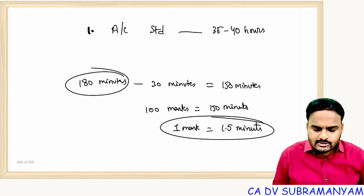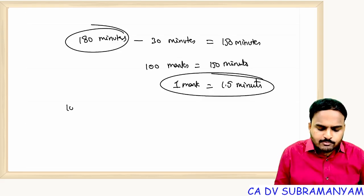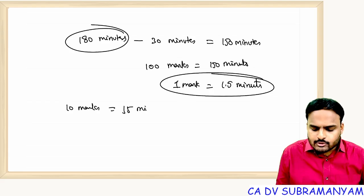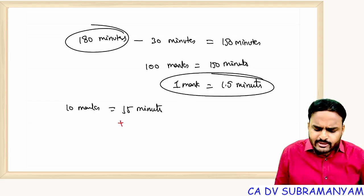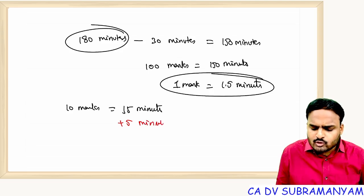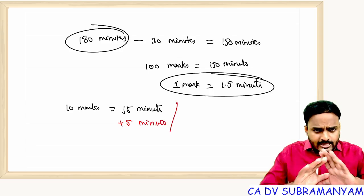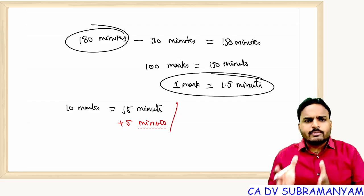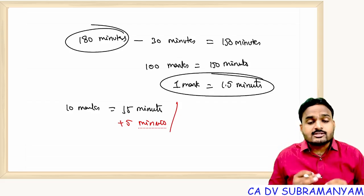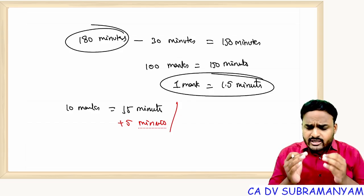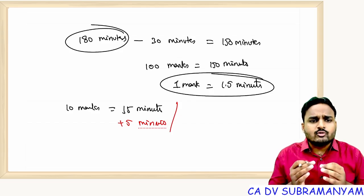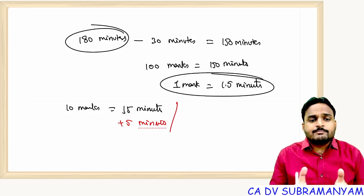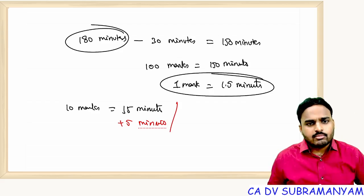That means if you are solving a 10-mark problem, maximum you should invest 15 minutes. If it has crossed 15 minutes, spend another 5 minutes — that's it. Beyond that, don't spend more time. Keep one or two pages blank and immediately start solving the next problem. The majority of students won't start another problem until they finish the current one.